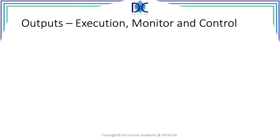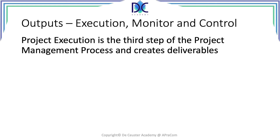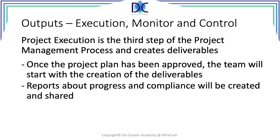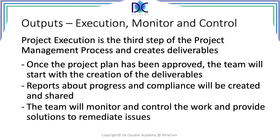For the outputs of execution and monitor and control, we look at the creation of the deliverables. Once the project has been approved and the plan accepted, we can continue with execution — though it's not always the case that we have permission to continue. Assuming our plan was good, we have good baselines and a valid business case, we start creating those deliverables. We also report on progress and compliance — that's the monitoring and controlling part. We share that information with stakeholders and use it to evaluate the progress of the project. The team monitors and controls the work and provides solutions to remediate issues.